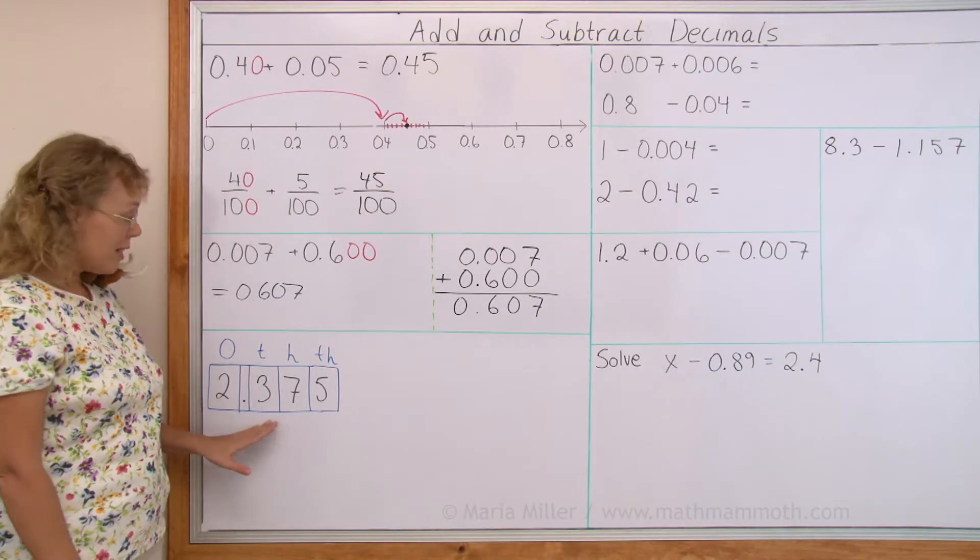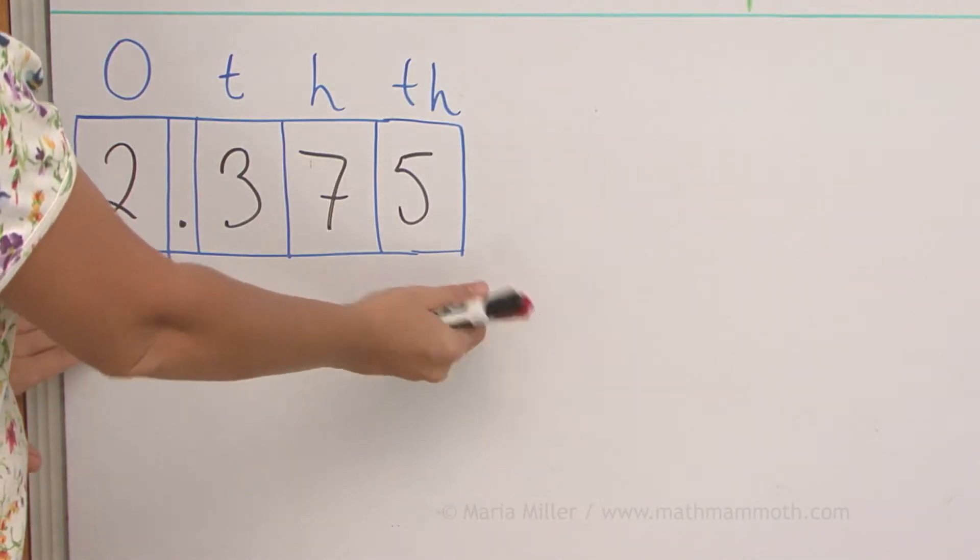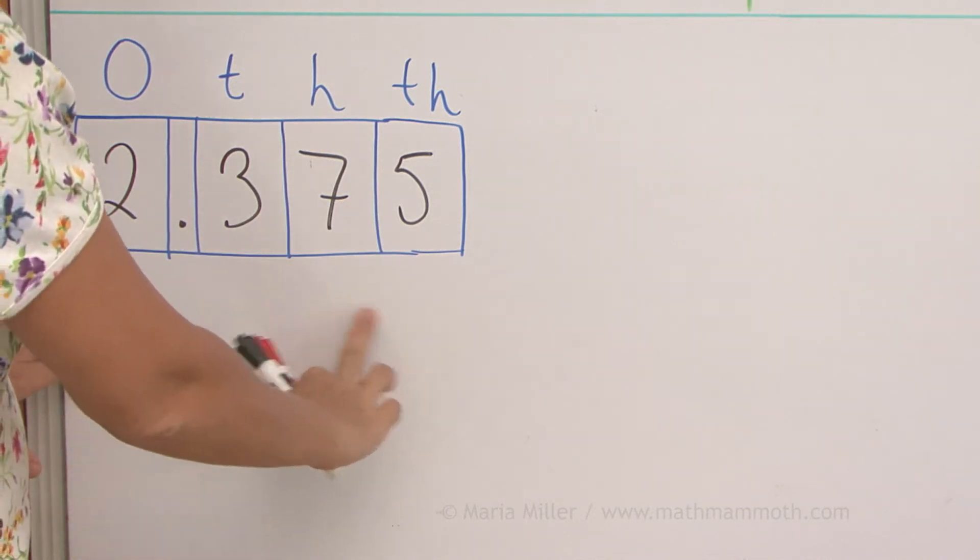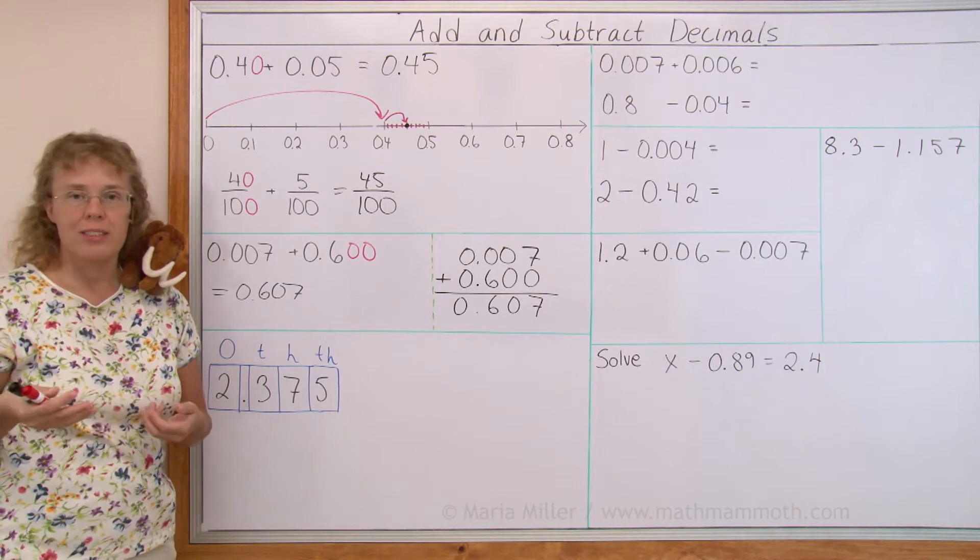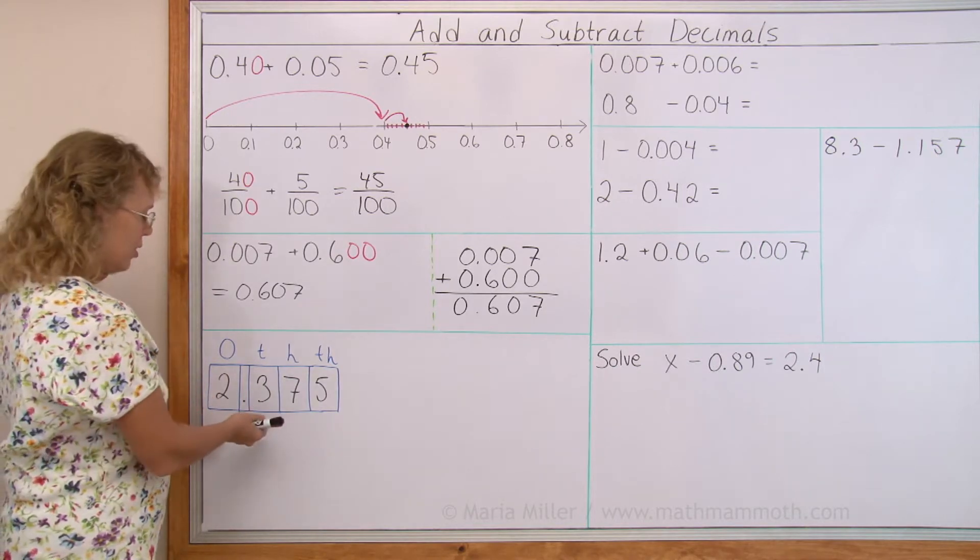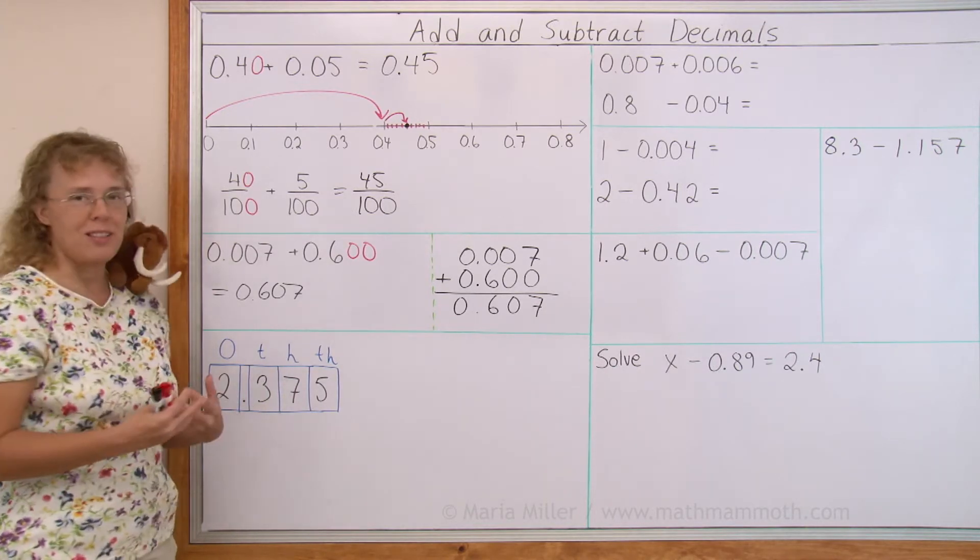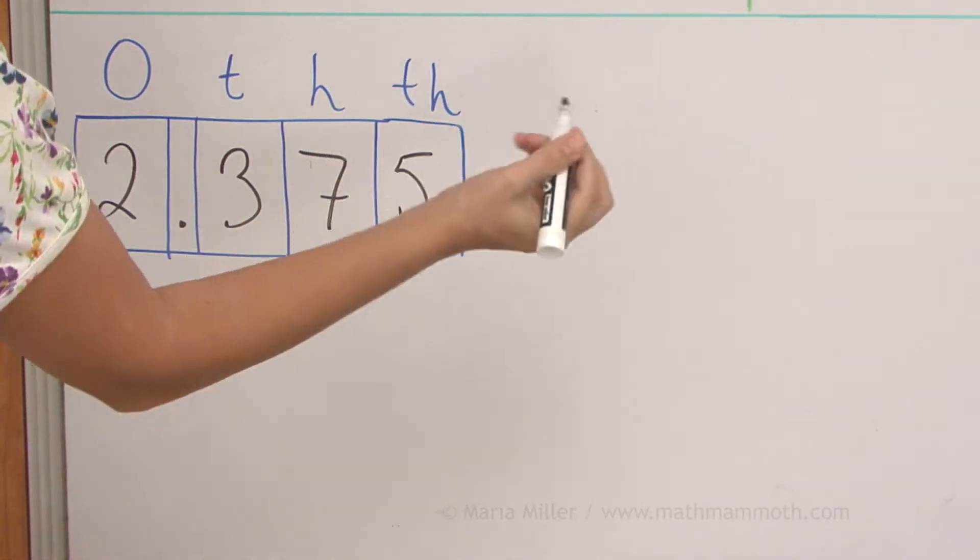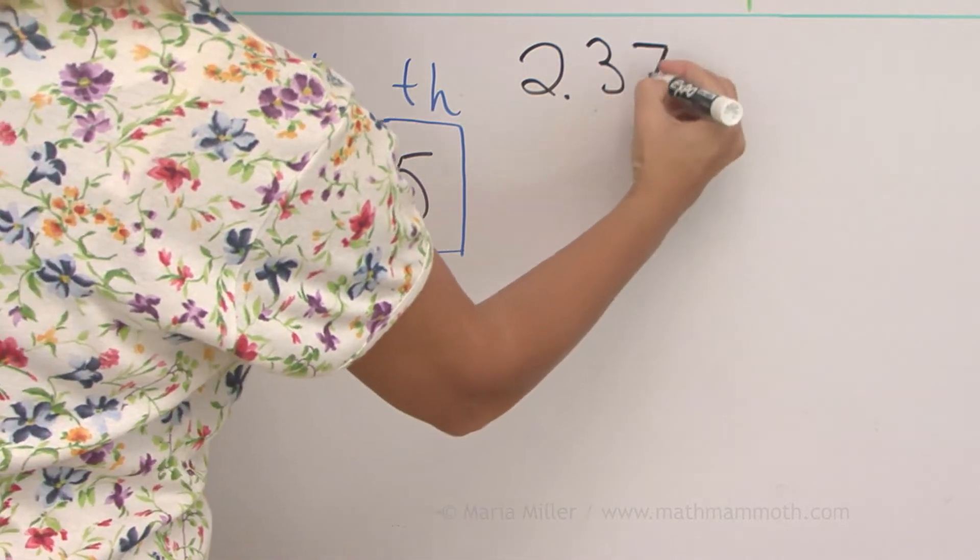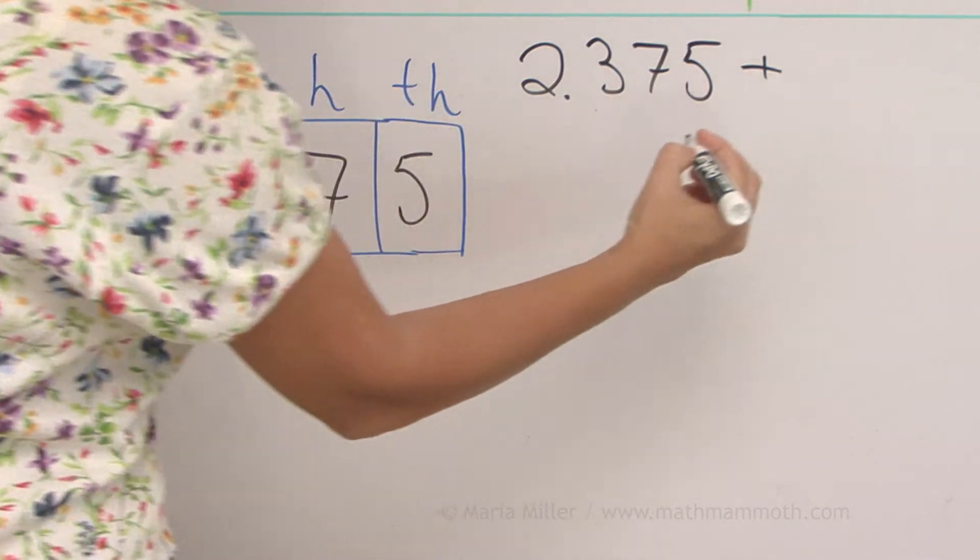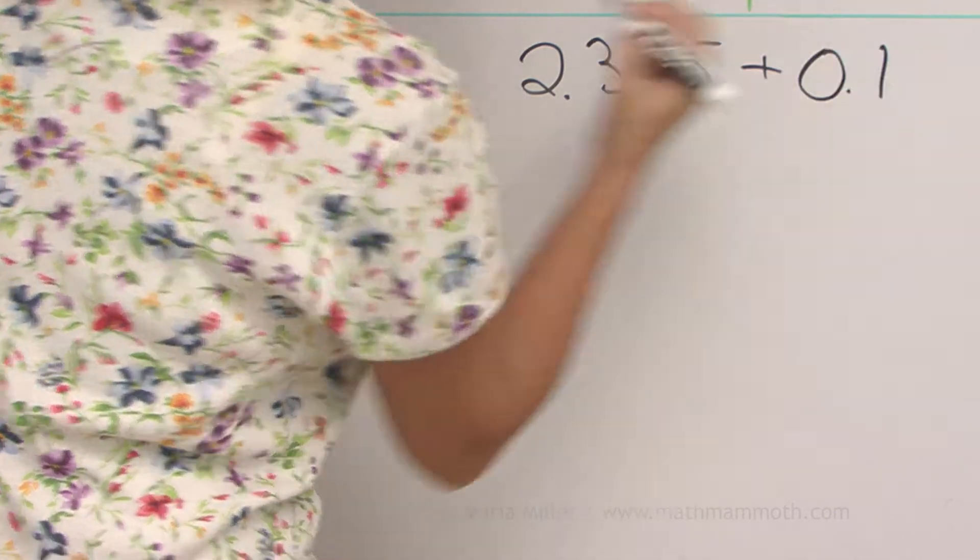In this problem I wrote my number in a place value chart: 2.375. Our task is to add a tenth to it, and then also to add one hundredth to it and then one thousandth to it. So if I write my addition problems, they are like this: 2.375 plus one tenth.